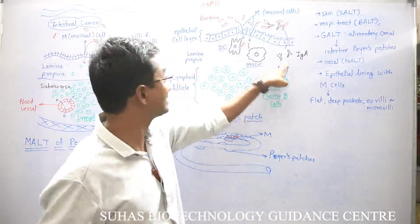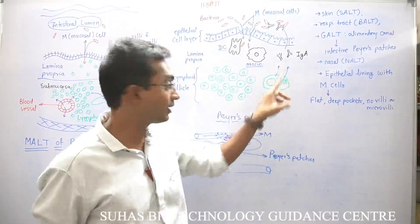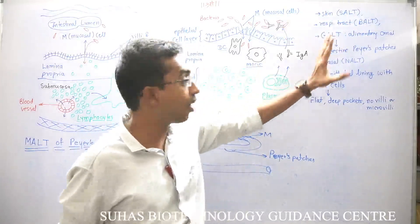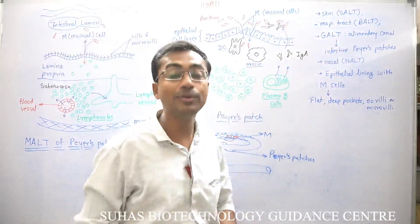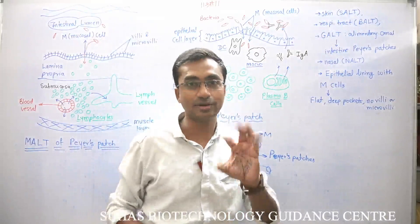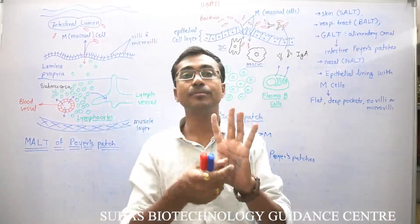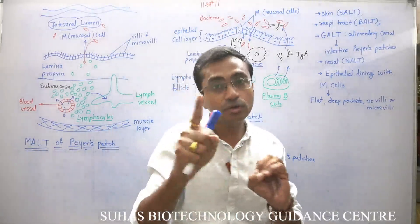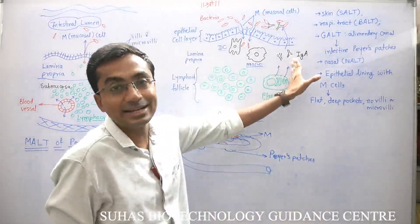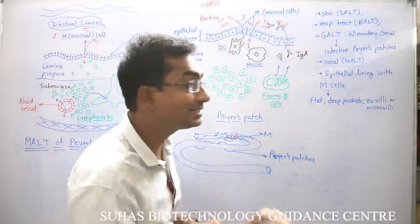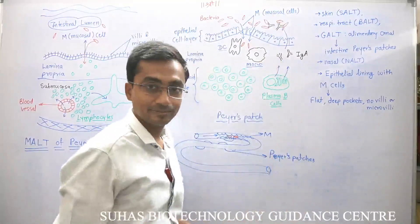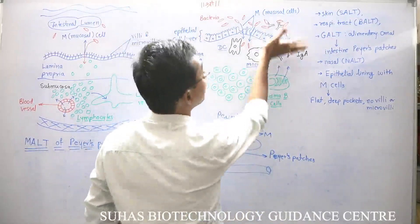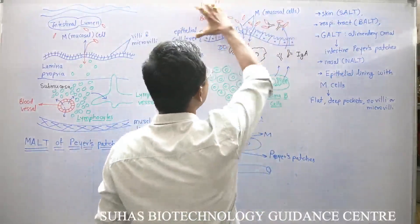All the antibodies released in the MALT — whether in Peyer's patches or elsewhere inside — are of IgA type. Immunoglobulin A only, because there are 5 types of antibodies: IgM, IgG, IgA, IgE, and IgD. Out of these, only IgA is secreted here, because IgA can easily cross such epithelial linings. Since IgA can cross the epithelial linings, it will cross them and go into the lumen of the intestine.